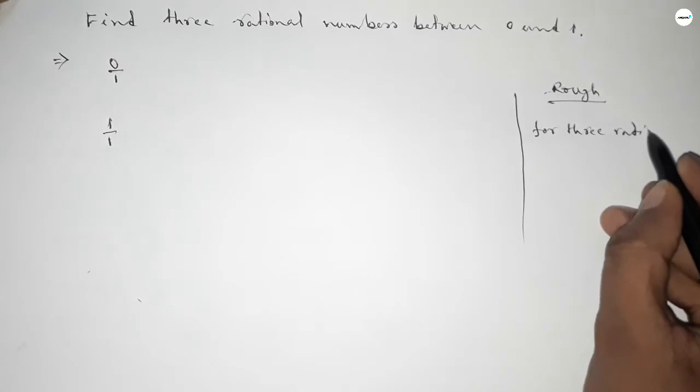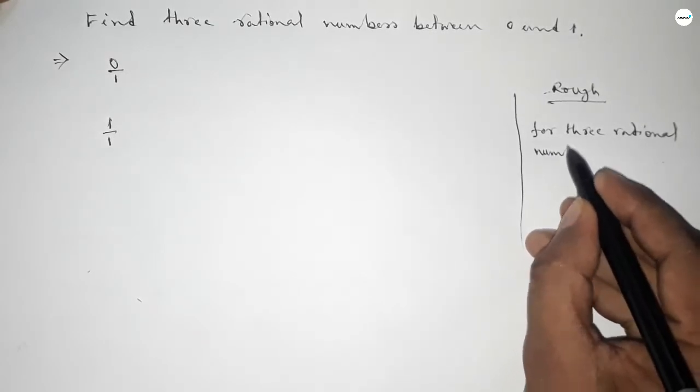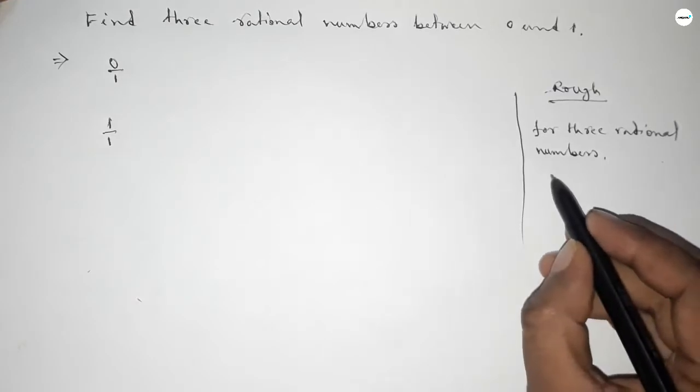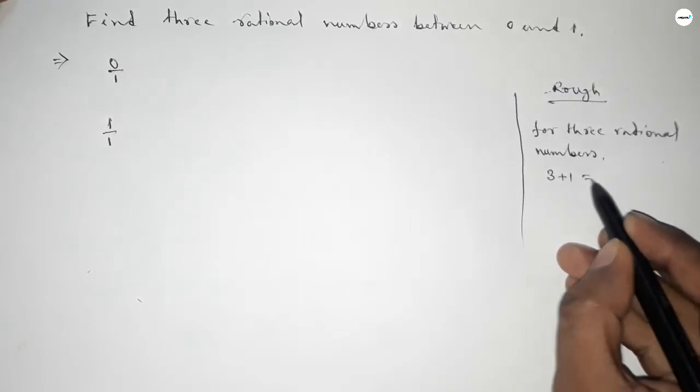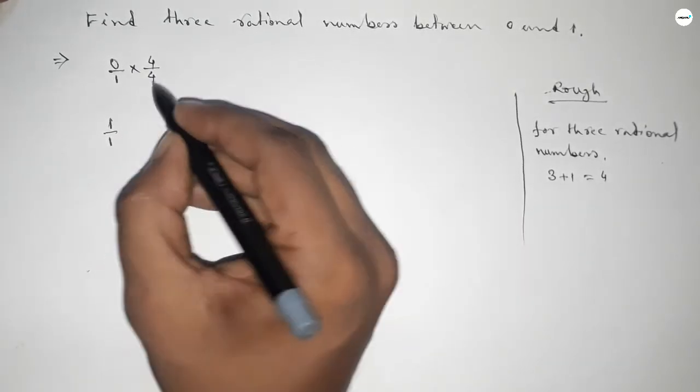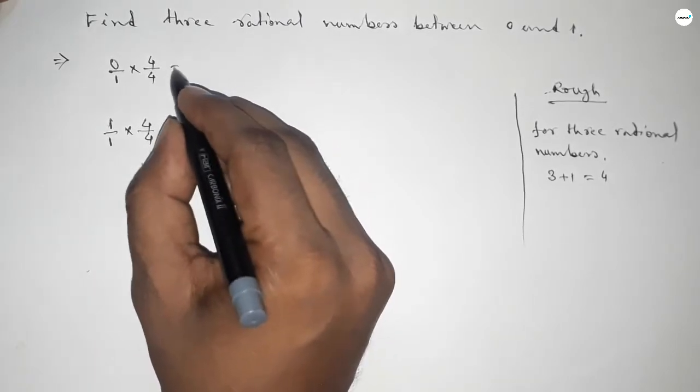We should multiply both numbers by 3 plus 1 equal to 4. So we're multiplying up and down by 4. This becomes 0 and this is 4 over 4.